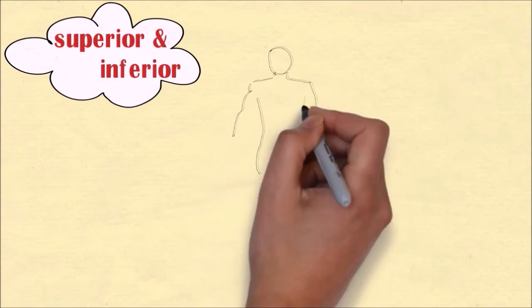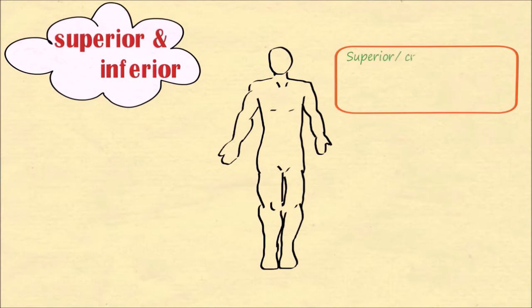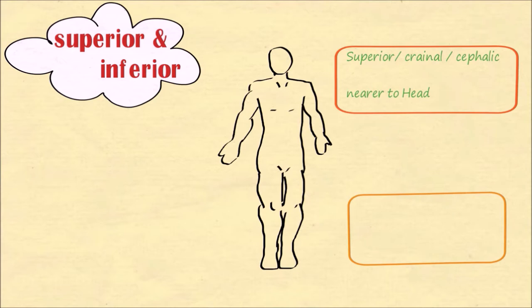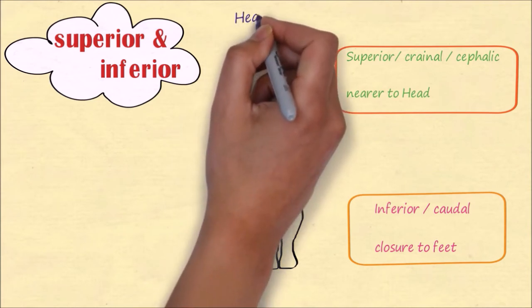The next terms are superior and inferior. Superior, also called cranial or cephalic — cephalic is used in embryology — means nearer to the head. Inferior, also known as caudal, means closer to the feet. For example, the head is superior to the shoulders.